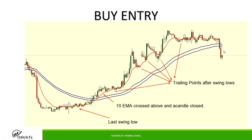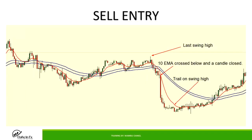You're not yet entering a sell because the 10 EMA has not crossed the two 50s — so be patient. For a sell entry, wait for the 10 EMA to cross below the two 50s and a candle to close. Your stop loss goes above the last swing high, and you trail on each new swing high. You'll have gained profits from the entry all the way down to where you're stopped out.